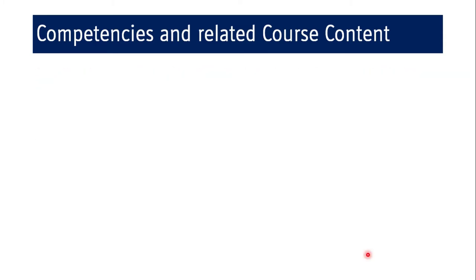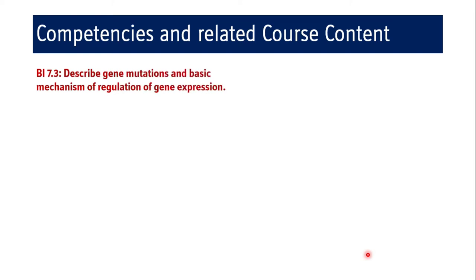BI 7.3 states: describe gene mutations and the basic mechanism of regulation of gene expression. The course content under this competency includes causes and types of genetic mutation with examples, and regulation of eukaryotic gene expression.